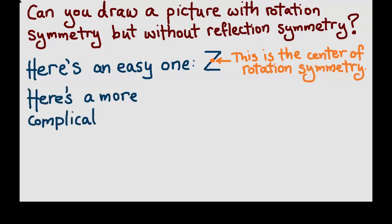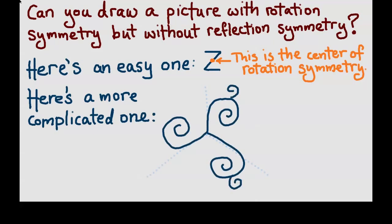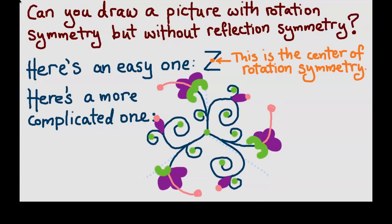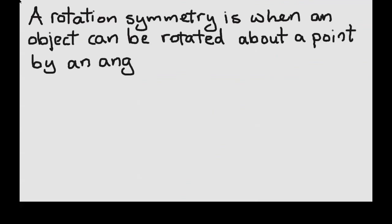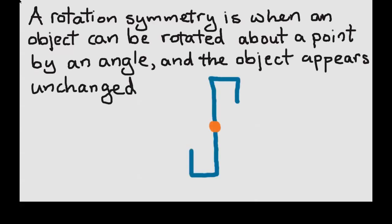Here's a more complicated one. Here I drew in three dotted lines that were equally spaced around a point so that I had a scaffold to draw my picture over. A rotation symmetry is when an object can be rotated about a point by an angle and the object appears unchanged.